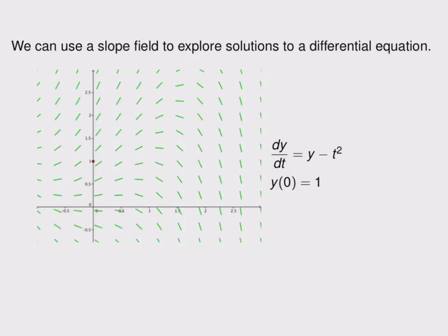We can use a slope field to explore solutions to a differential equation. In this example, we're interested in the initial condition y(0) = 1. In other words, we want to follow a solution that goes through the point (0,1), which is plotted on the graph.